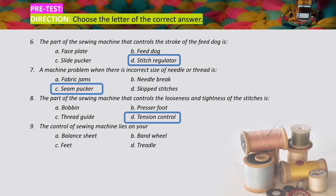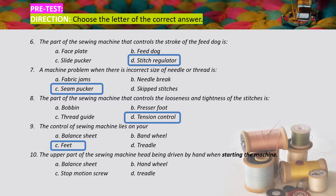Number nine: the control of the sewing machine lies on your — A) balance sheet, B) band wheel, C) feet, D) treadle. The correct answer is letter C, because the control of our sewing machine lies on our feet. Number ten: the hand wheel — the correct answer is letter B, hand wheel.